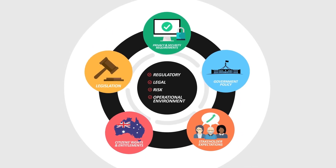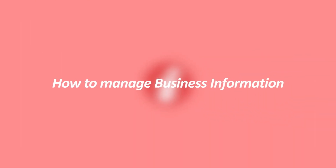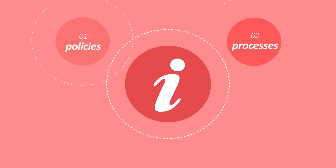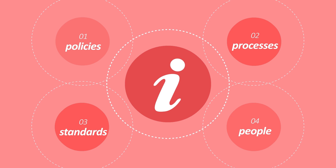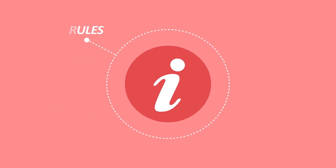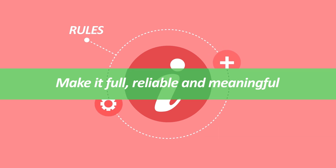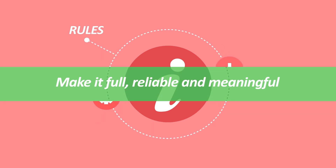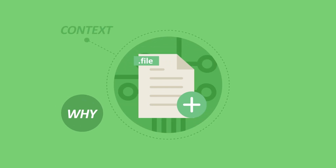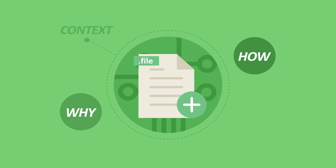Now we know why information matters, let's move on to how we manage it. Your organisation's information governance arrangements — which include policies, processes, standards and people — will help manage information effectively and accountably. There are also some simple rules you should follow in your day-to-day work when creating and managing business information: make it full, reliable and meaningful.